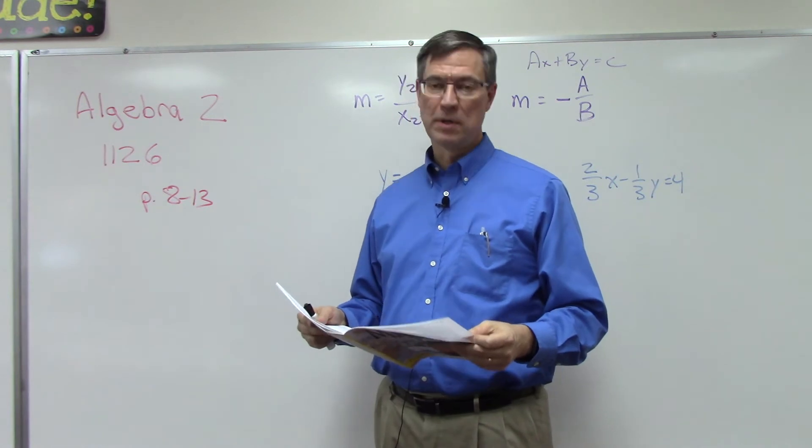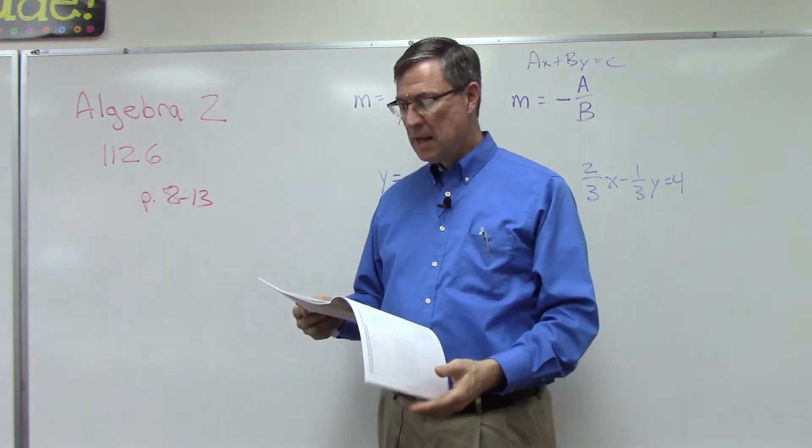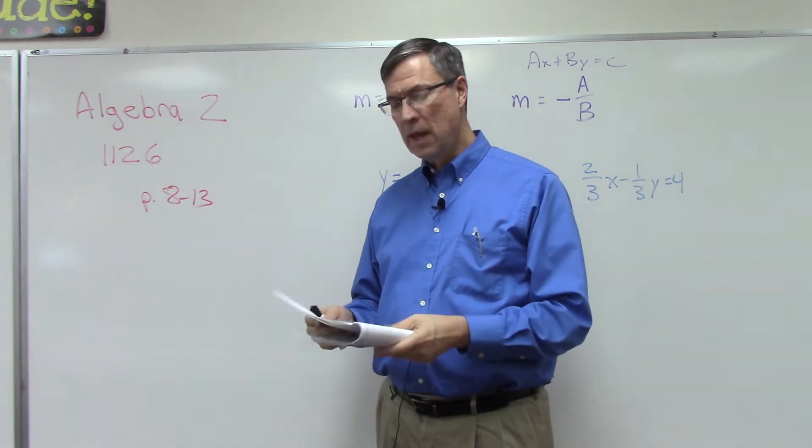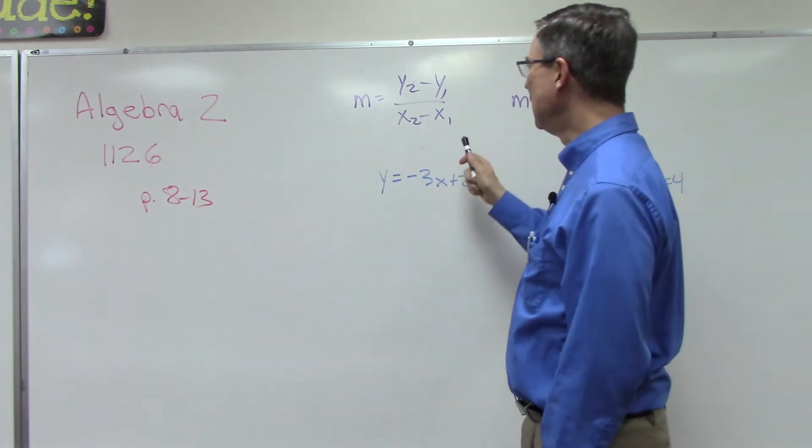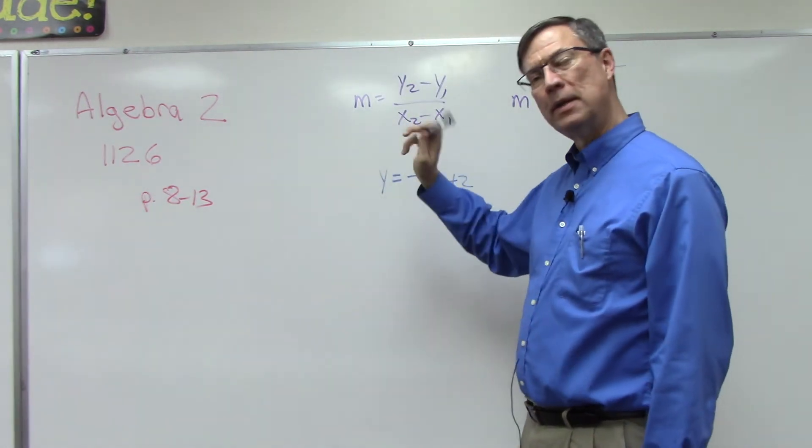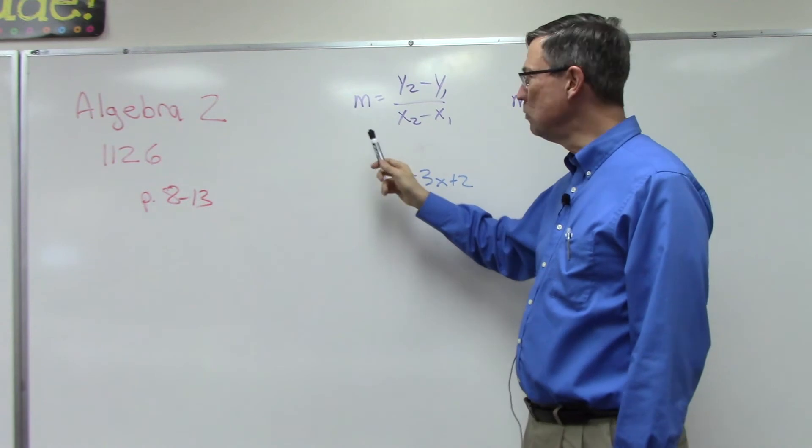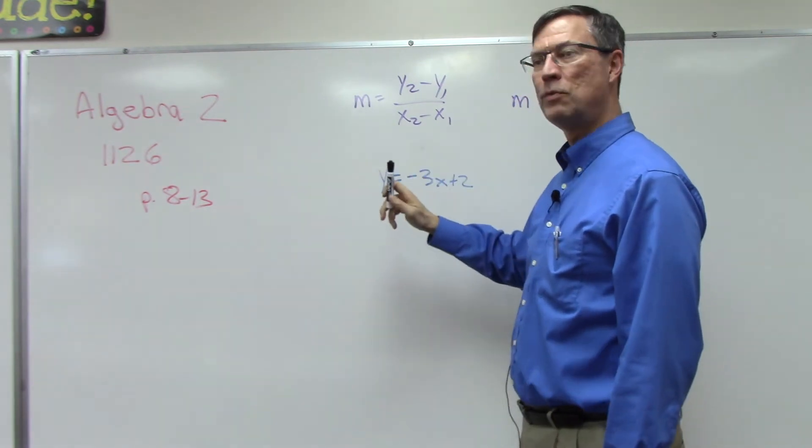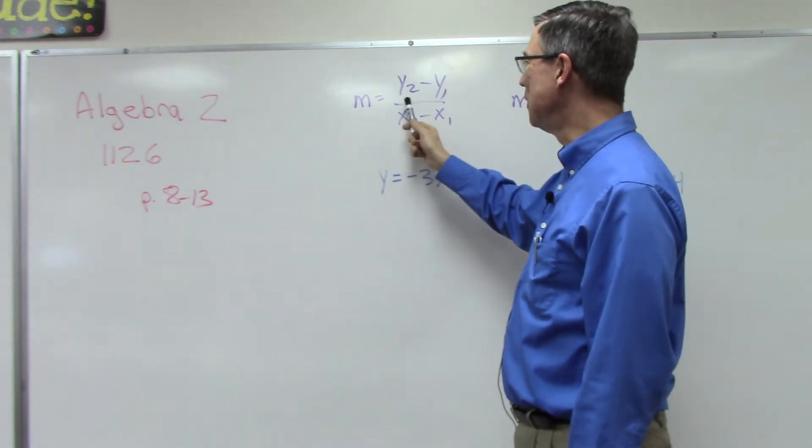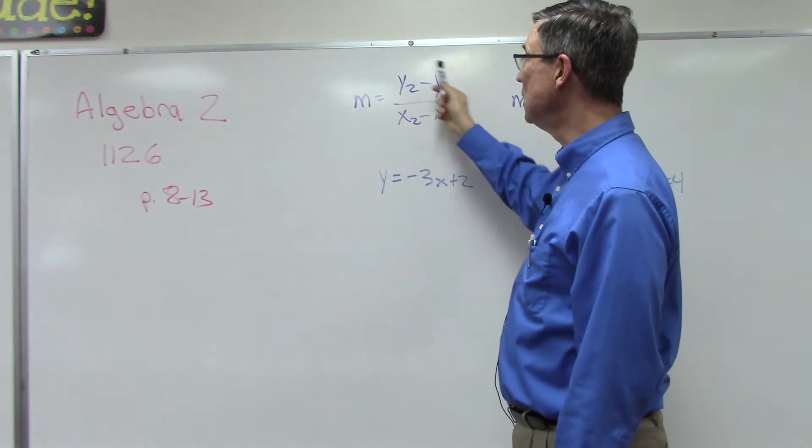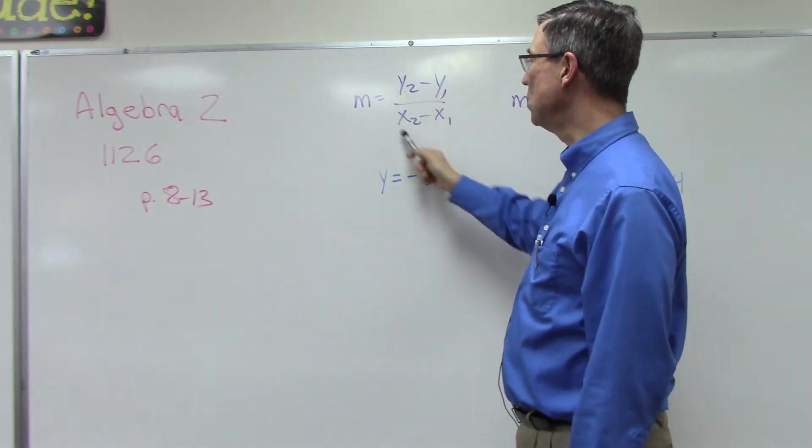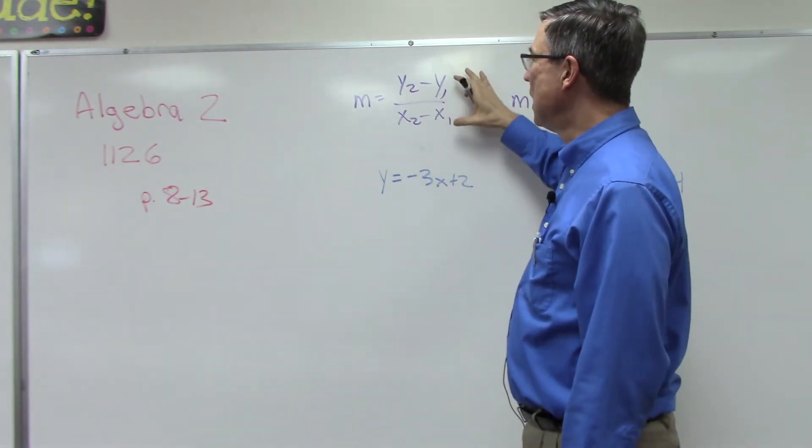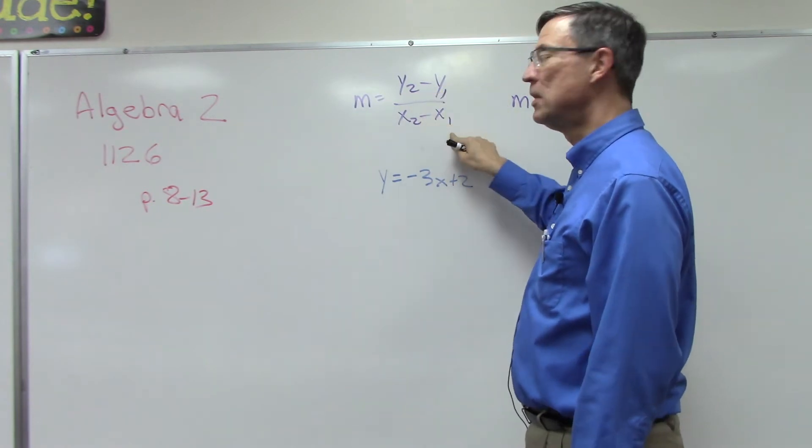Let's go on to page 11, and it's talking about slope. Again, this is review, but the slope we use the letter M to represent, and we can say there's the change in Y over the change in X, and these are coming from two points.